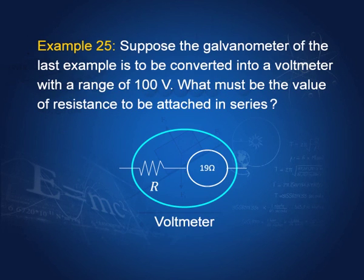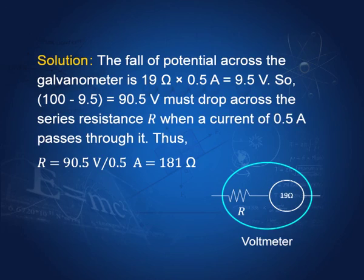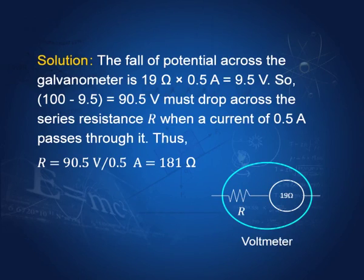Suppose the galvanometer of the last example is to be converted into a voltmeter with a range of 100 volts. What must be the value of the resistance attached in series? The potential drop across the galvanometer is 19 ohms × 0.5 amperes = 9.5 volts, so up to 9.5 volts is across the galvanometer. The remaining 90.5 volts must fall across the series resistance. With current 0.5 amperes and potential drop 90.5 volts, the resistance must be 90.5 / 0.5 = 181 ohms. Applying simple logic, you can solve such problems of converting galvanometers into ammeters and voltmeters.